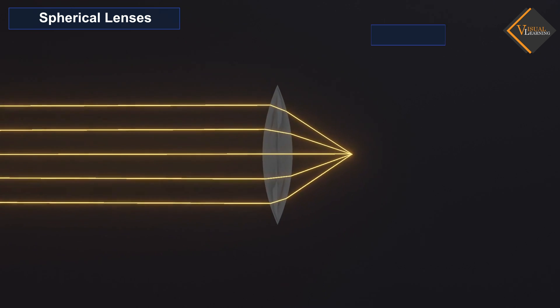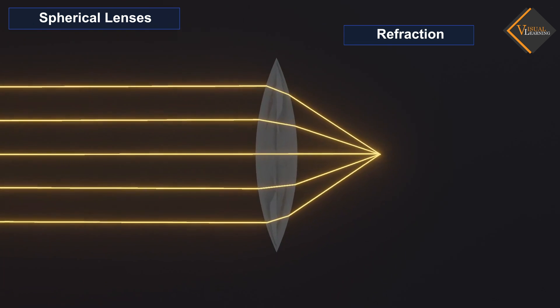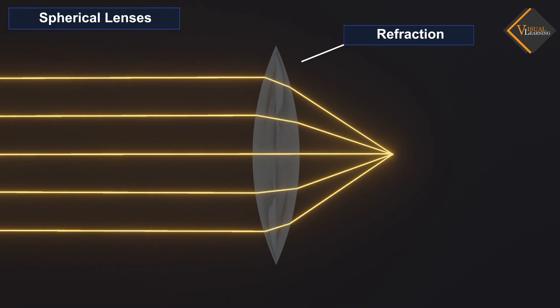Refraction of a light beam occurs both where the beam enters the lens and where it emerges from the lens into the air.